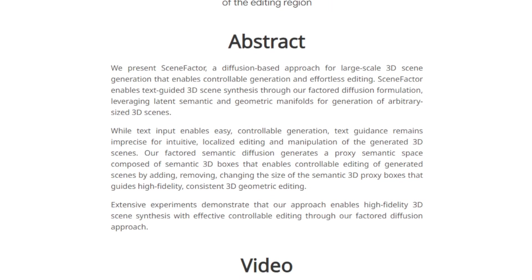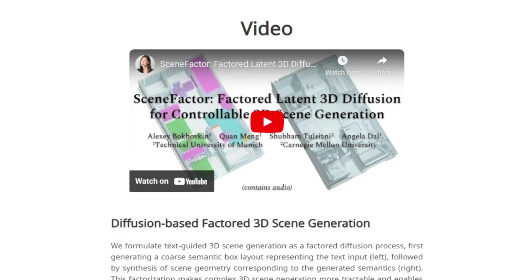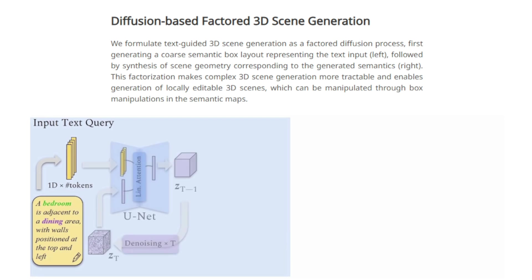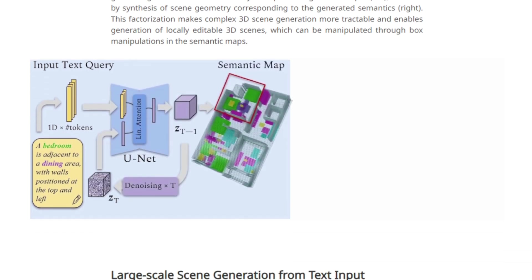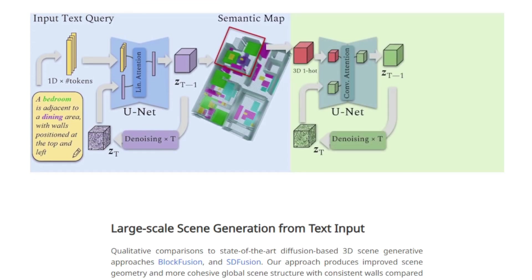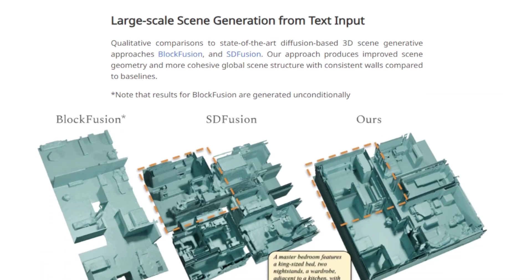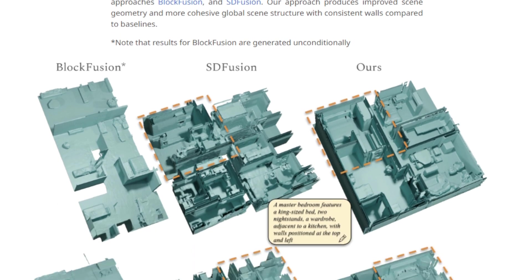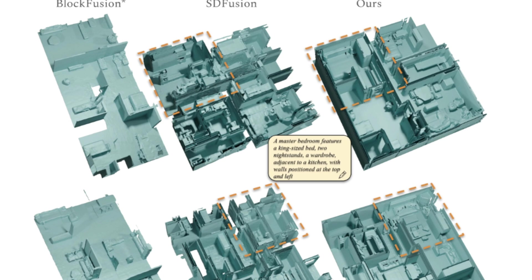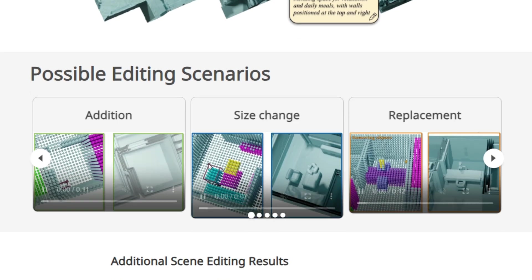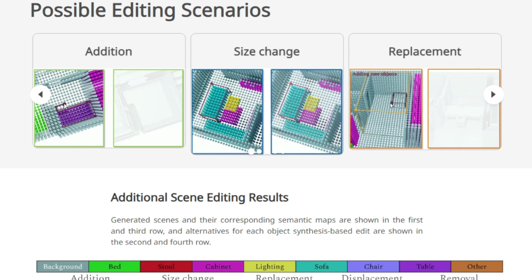For instance, if you want to generate a 3D scene depicting a living room with a fireplace and a comfortable sofa, Scene Factor first constructs a basic semantic layout using coarse bounding boxes. Each box symbolizes a key component of the scene, such as the fireplace or sofa, akin to creating a rough sketch with placeholders. In its second phase, Scene Factor refines this layout into detailed 3D objects guided by the initial semantic boxes, dividing the task into simpler, manageable steps.